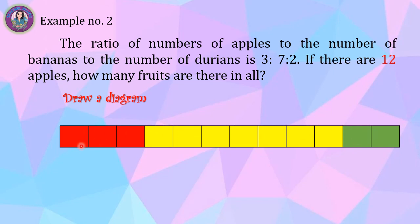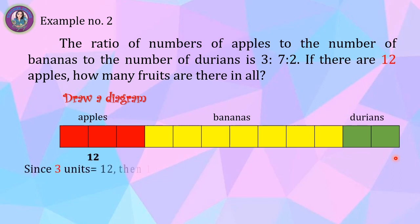In the diagram, the red part shows the number of apples which is 12, the yellow part shows the number of bananas, and the green part shows the number of durians. Since 3 units equals 12, then 1 unit equals 12 ÷ 3 = 4.